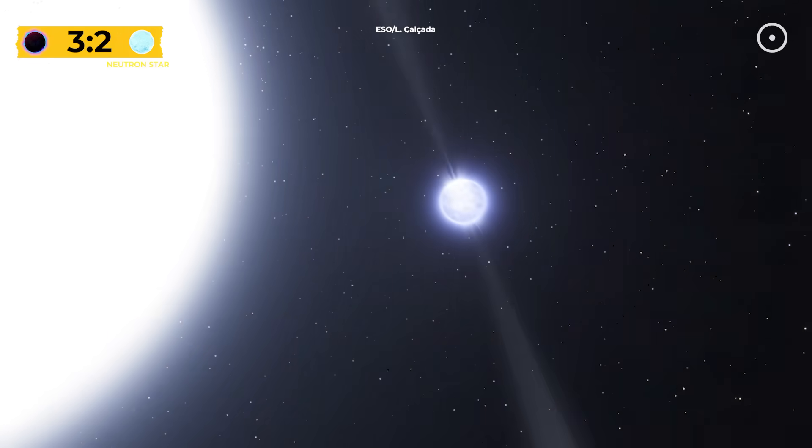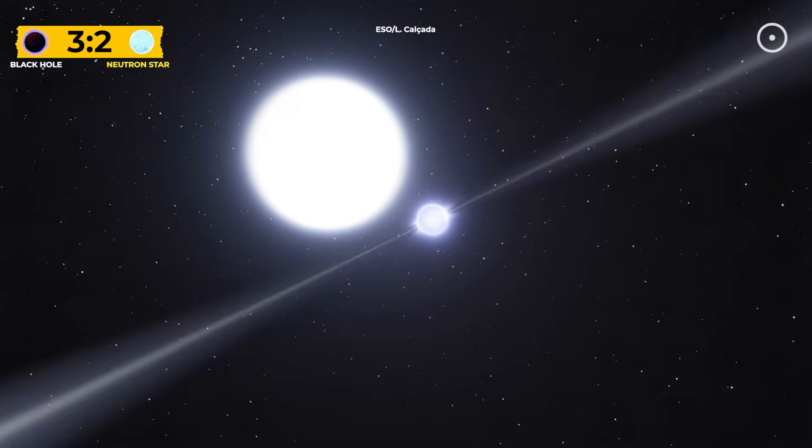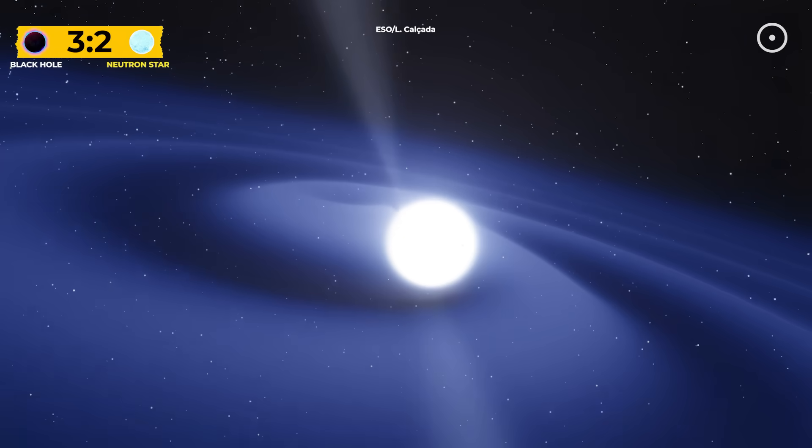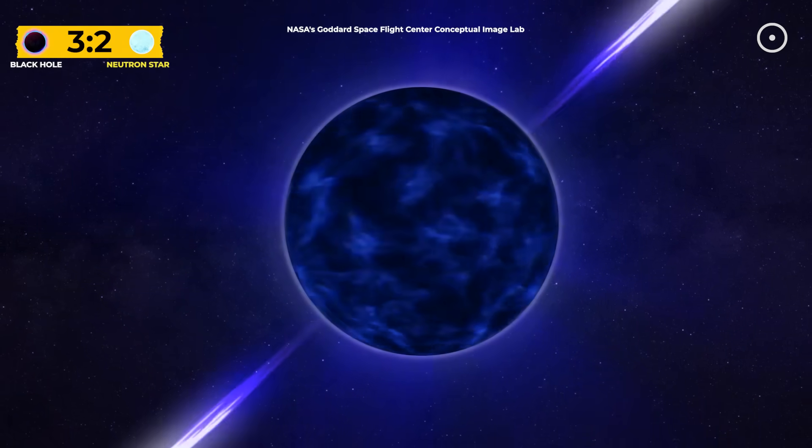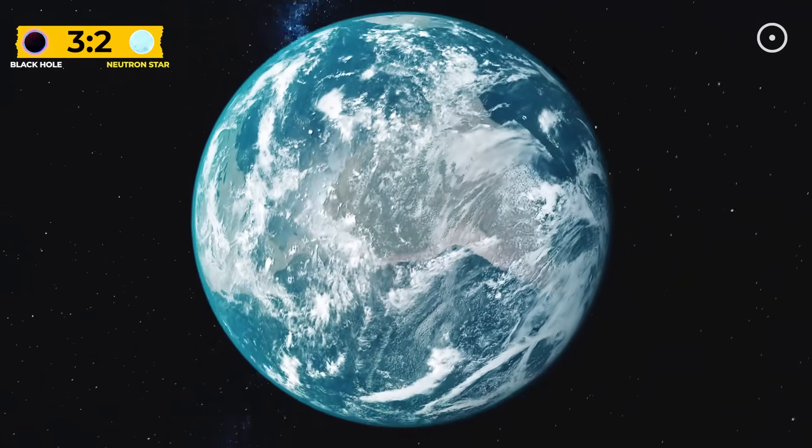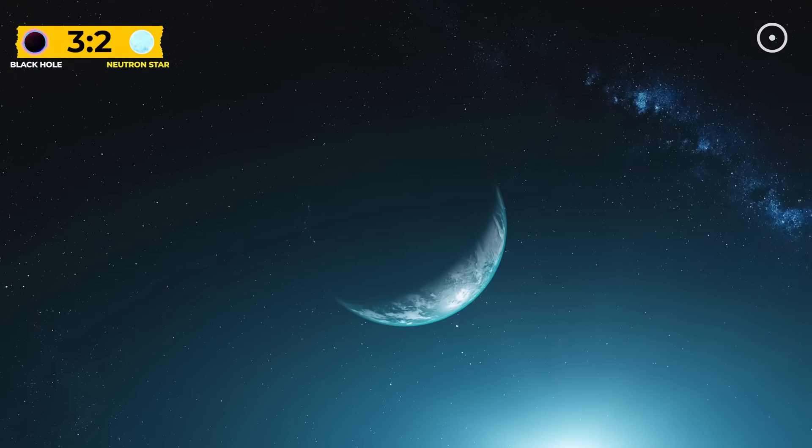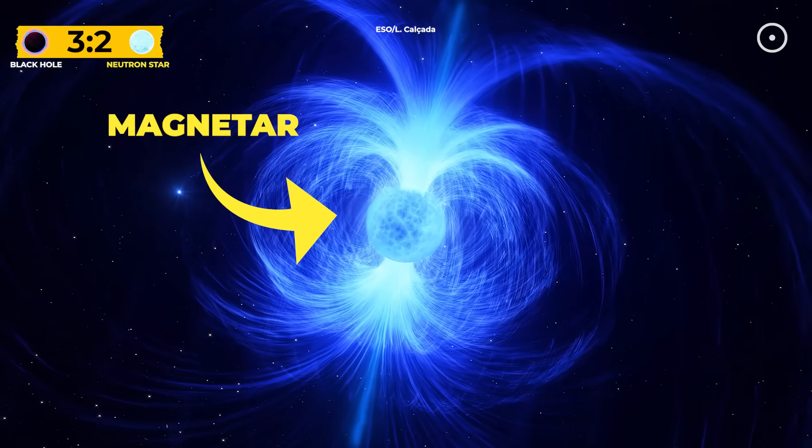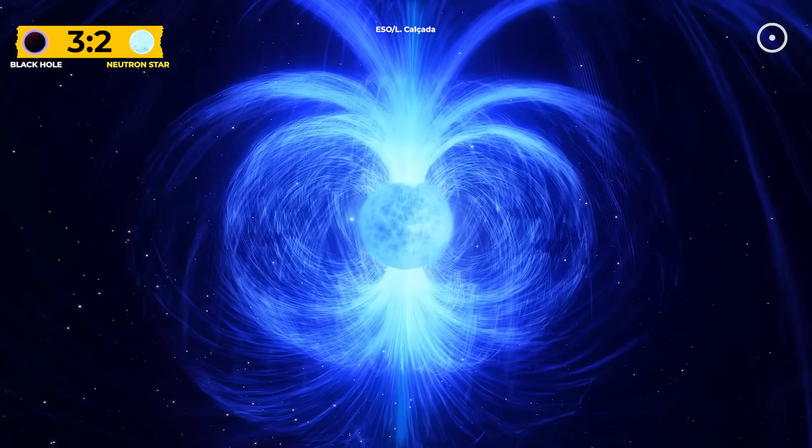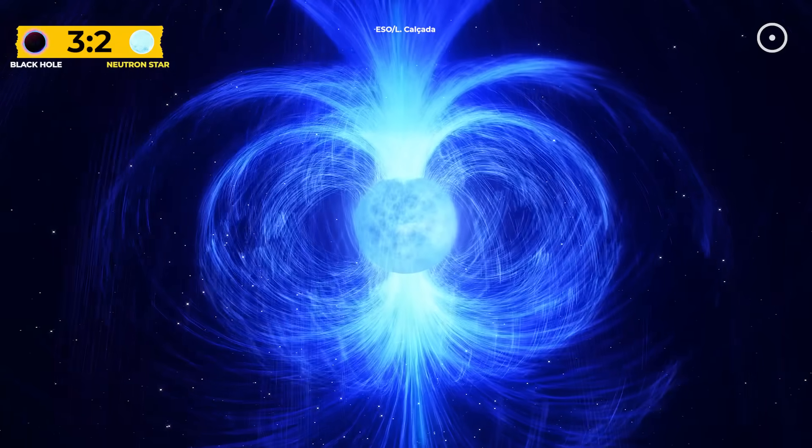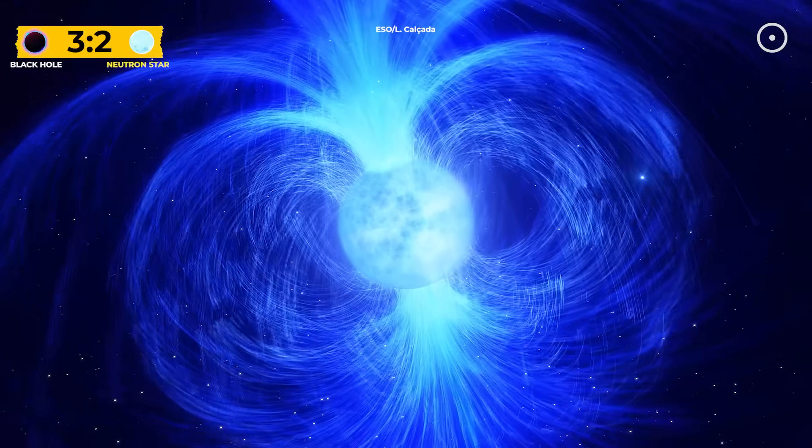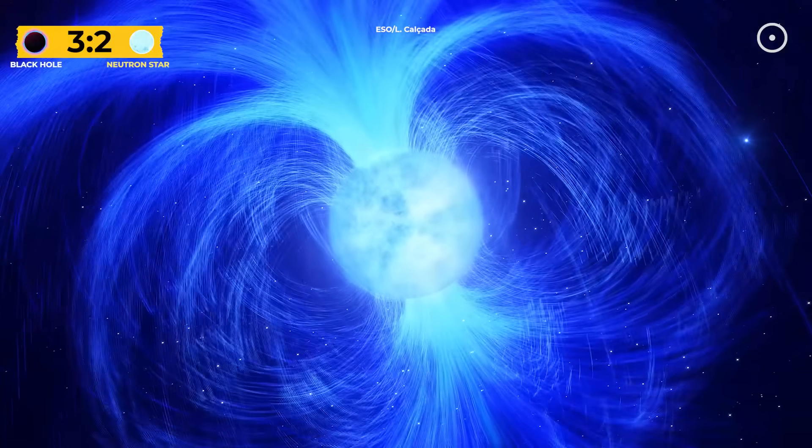Some neutron stars become pulsars, cosmic lighthouses that emit beams of radiation while spinning hundreds of times per second. The fastest known pulsars spin 716 times per second. If Earth rotated that fast, we'd all be flung into space. Then there are magnetars, neutron stars with magnetic fields quadrillions of times stronger than Earth's. These cosmic magnets are so intense, they can bend atoms. And if one passed close enough to Earth, it could mess with chemistry and electronics.